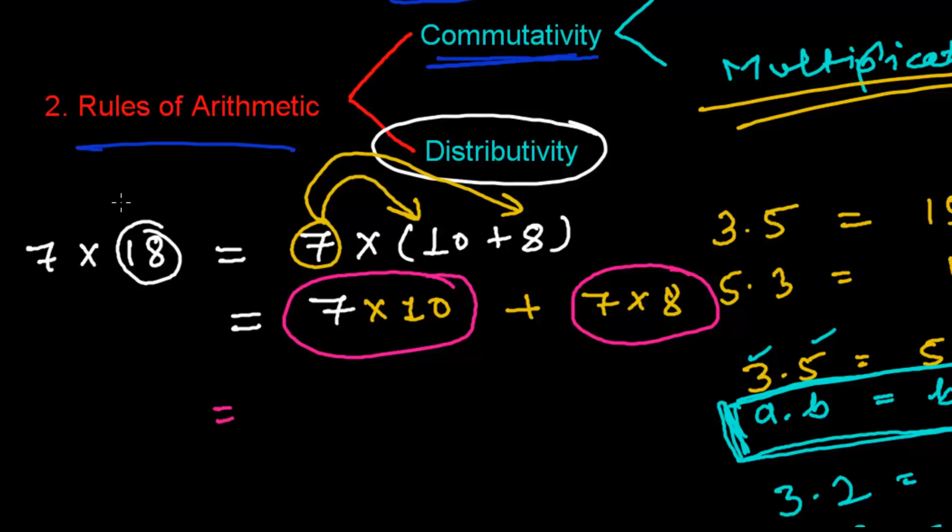Or maybe this can be anything, 38, 45, whatever. So 7 times 10, that is 70, and 7 times 8, that is 56. And see how easy it's going to be now. So simply I'm going to add this, 116. So 7 times 18 is 116.